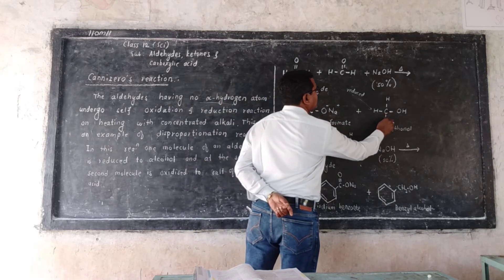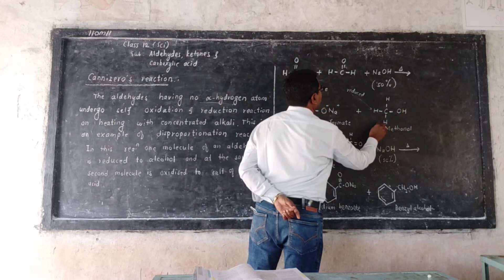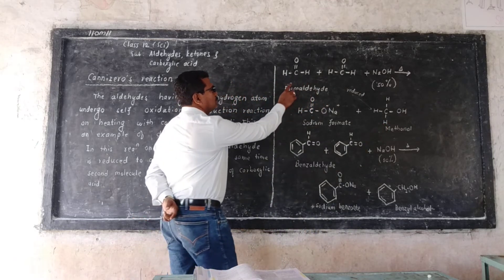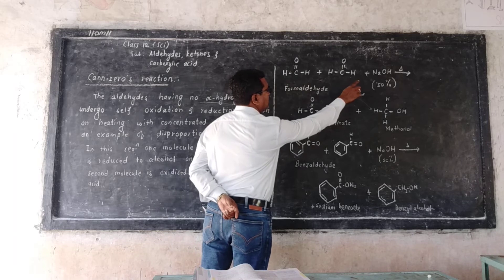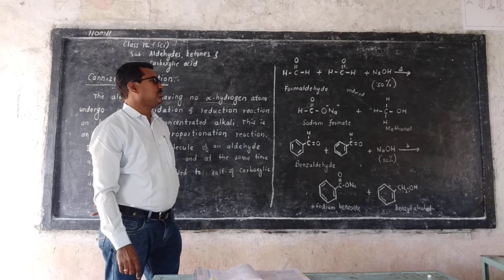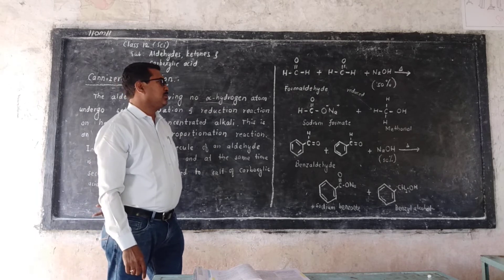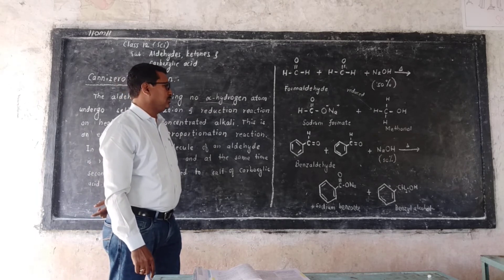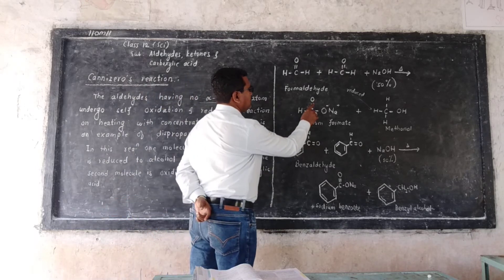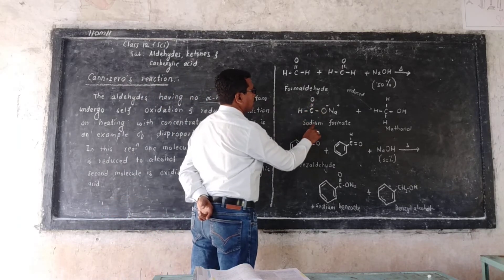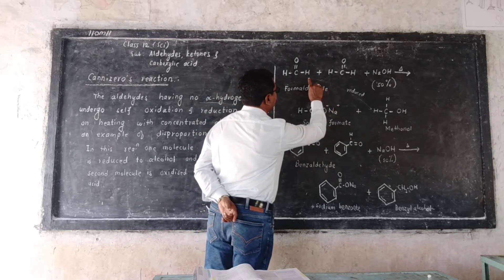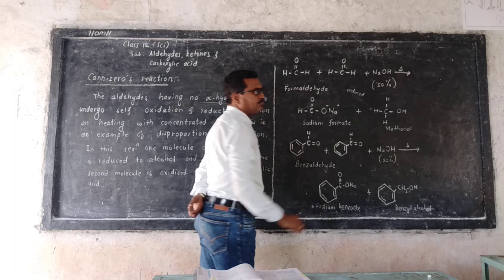And here, addition of hydrogen in formaldehyde means reduction takes place. So two molecules of formaldehyde are treated with concentrated sodium hydroxide — 50% sodium hydroxide. One molecule of formaldehyde is oxidized to sodium formate and one molecule of formaldehyde is reduced to methanol.